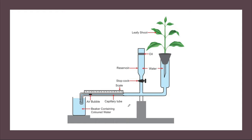This is how the potometer looks. We have a beaker containing colored water, an air bubble, a capillary tube, a scale to measure how much transpiration has occurred, a reservoir, and a stopcock. The reservoir basically stores extra water. We lift the capillary tube slightly, let a small air bubble enter, and place the leafy shoot at one end of the capillary tube.